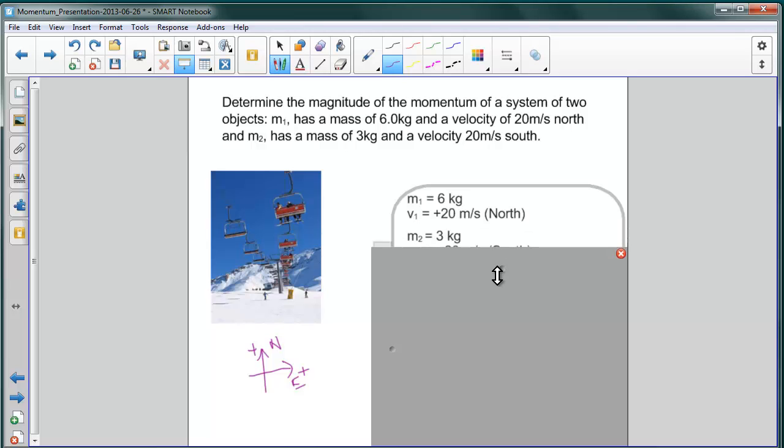We have that the mass of object number one is 6 kilograms. Its velocity is 20 meters per second. It's going north, and therefore, we use a positive sign on it to indicate north.